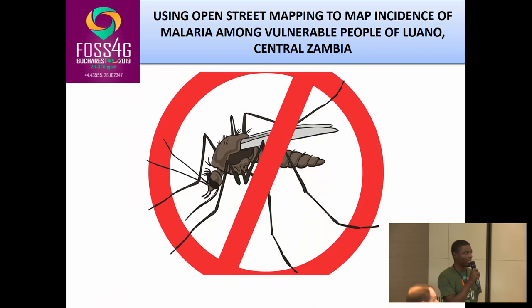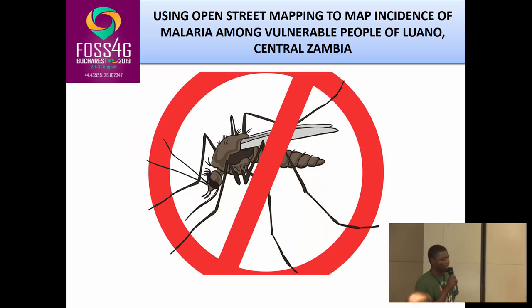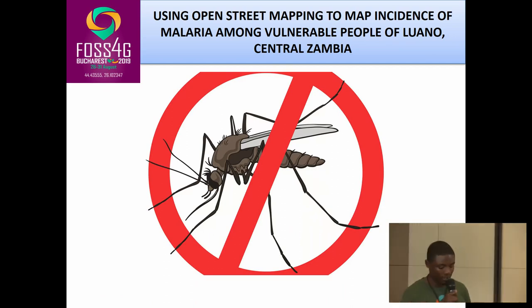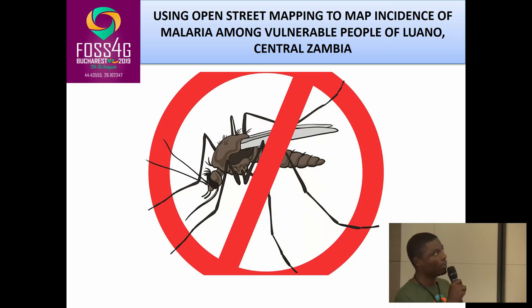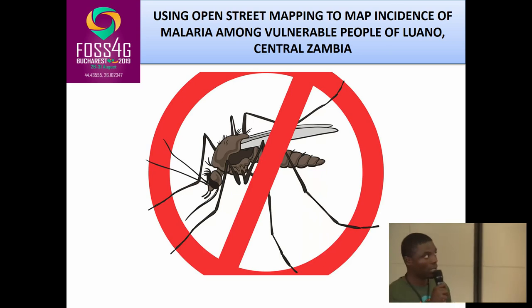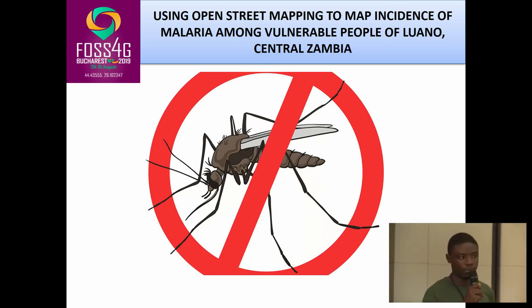Good afternoon everyone. My name is Chombachala. I'm from Zambia and I'm a YouthMappers Research Fellow. This afternoon we're going to look at the project I'm currently doing, which uses OpenStreetMap to map the instances of malaria among the vulnerable people of Luano district, which is a central district in Zambia.